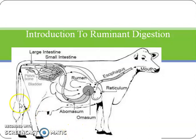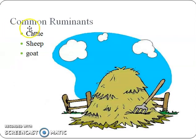Introduction to ruminant digestion. Ruminant is derived from the Latin word 'ruminere,' meaning to chew again. Ruminants are animals with four-part stomachs, which allows them to chew food more than once. Some common ruminants are cattle, sheep, and goat.